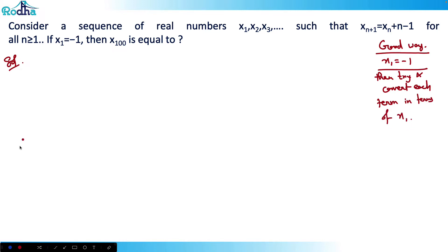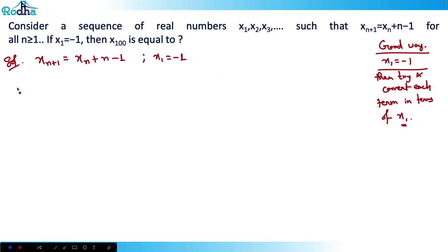The recurrence given is x(n+1) = xn + n − 1, and x1 = −1. Let's start with x2 and find a pattern. For x2, put n = 1: x2 = x1 + 1 − 1 = x1 = −1. So in terms of x1, x2 equals x1.